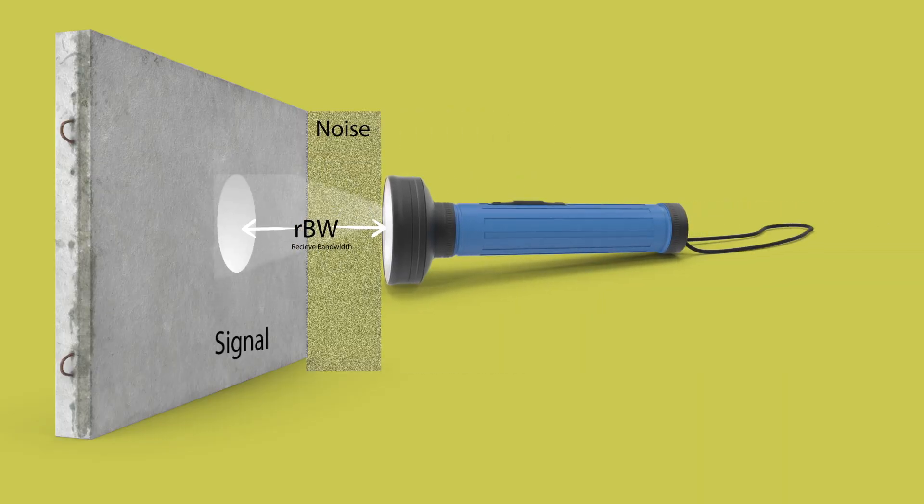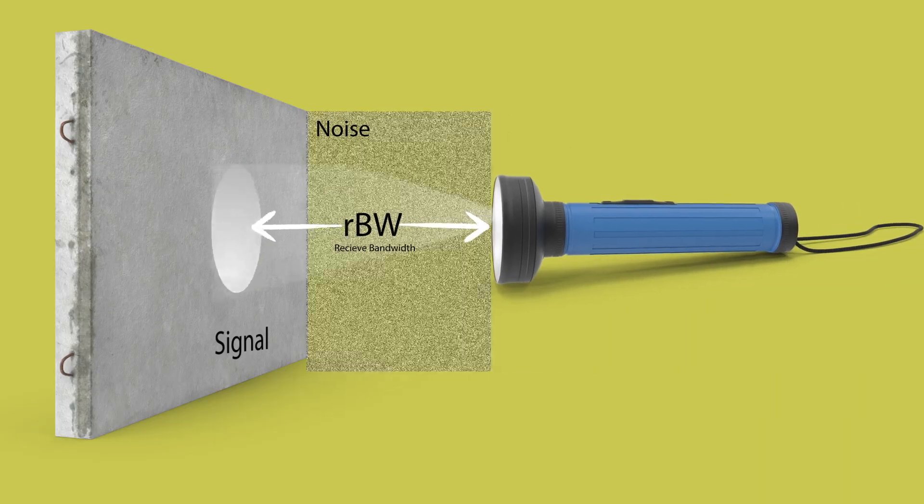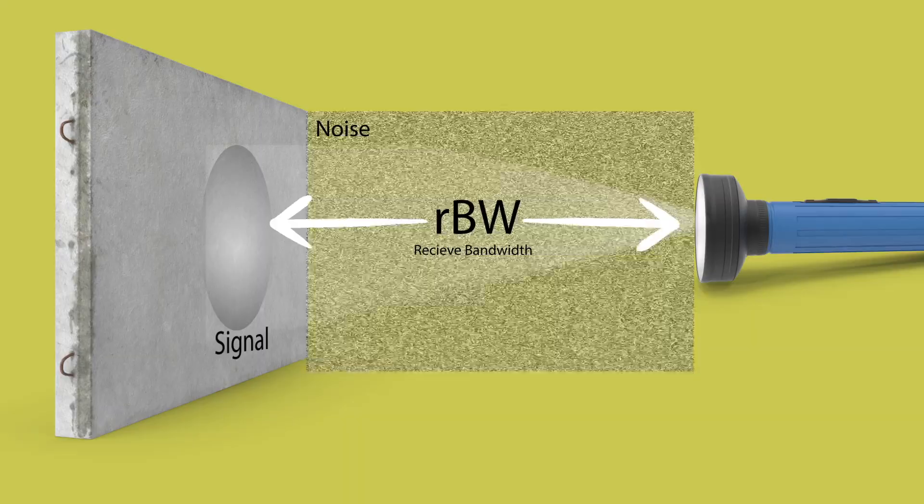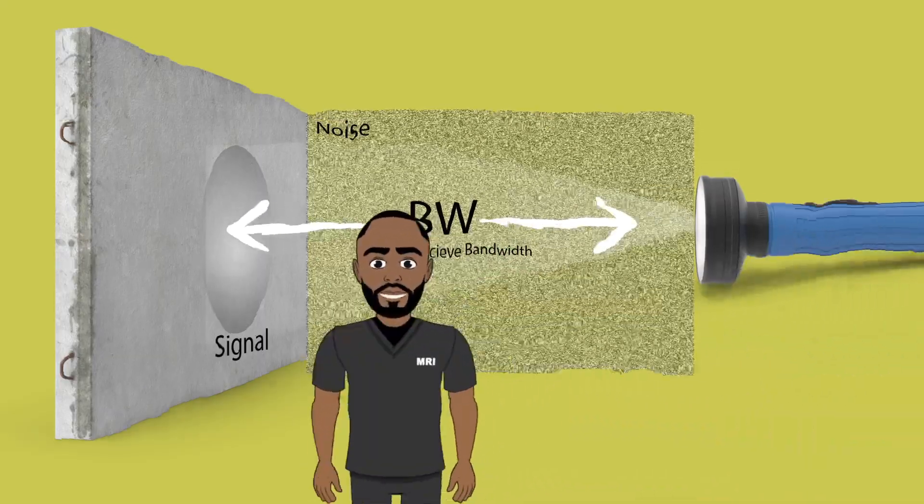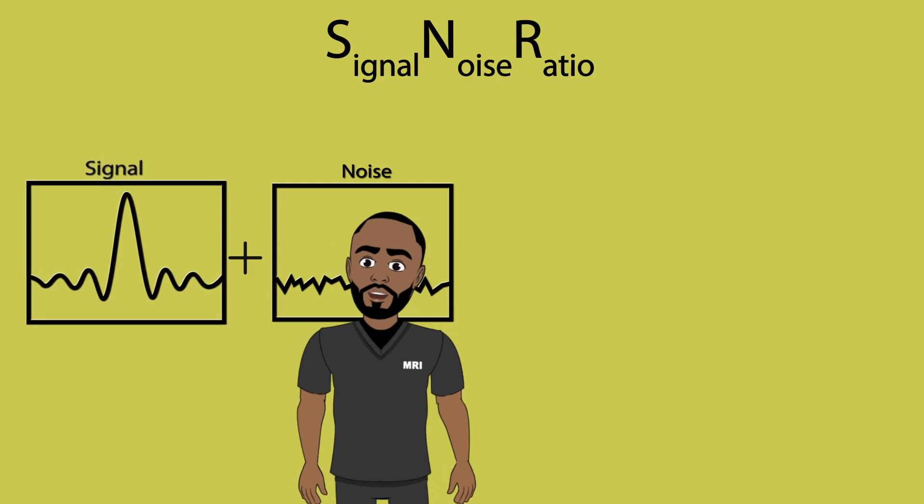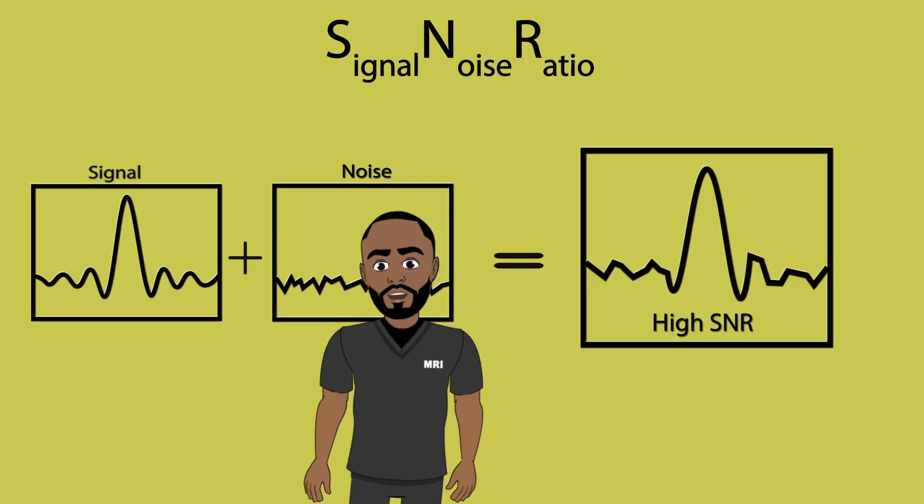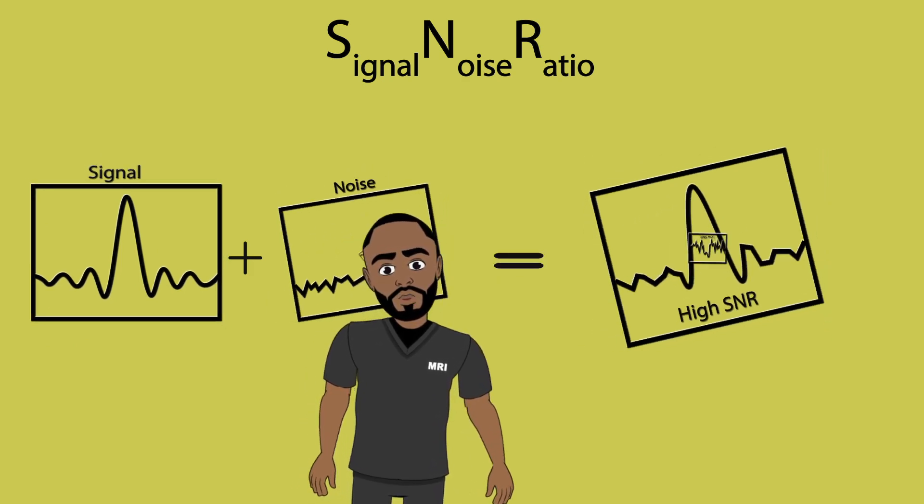Noise is the air in between them. The more you increase your received bandwidth, your signal goes down. It's not because you're collecting less signal. It's because the higher the received bandwidth, the more noise you let in and it drowns out your signal.